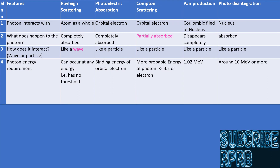Photon energy requirements in different interactions: Rayleigh scattering has no specific energy requirement; it can occur at any energy. The photoelectric effect has a threshold energy below which no photoelectric effect occurs. The threshold energy is the binding energy of the concerned orbital electron. Since the binding energy of different electrons inside an atom are different, and also different for different atoms, the photoelectric threshold can vary for different orbital electrons or different atoms.